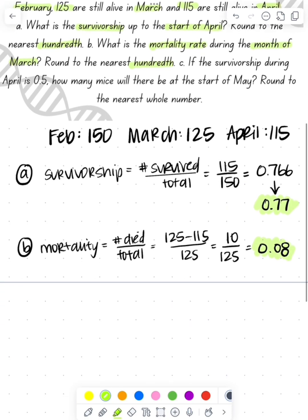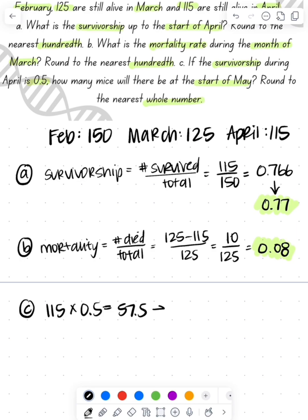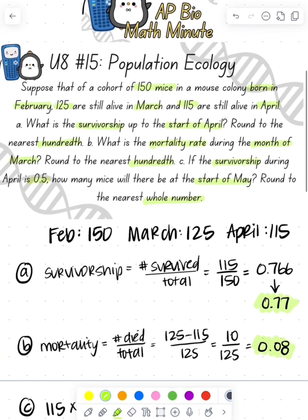For part C, the survivorship during the month of April is given as 0.5, and we need to calculate how many are still alive at the beginning of May. We take the number we have, 115, times the survivorship of 0.5, which gives us 57.5 — so 58 of them are still alive.